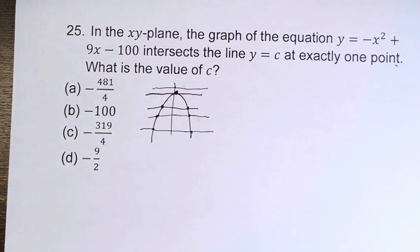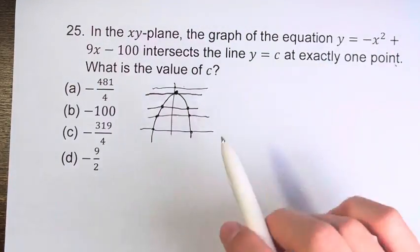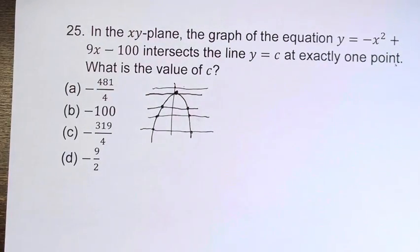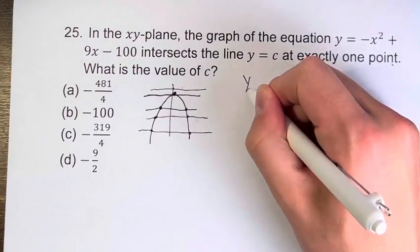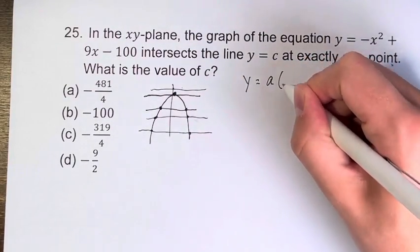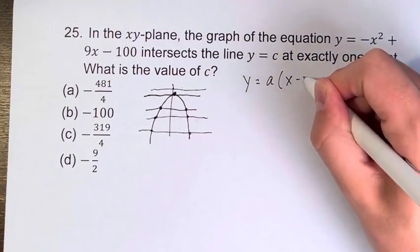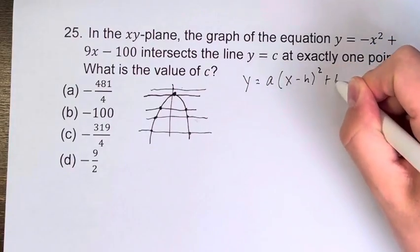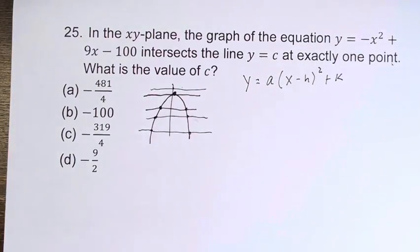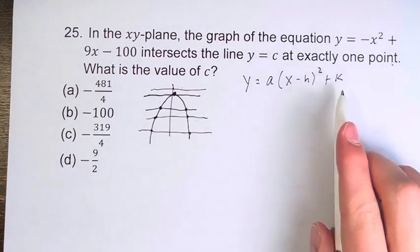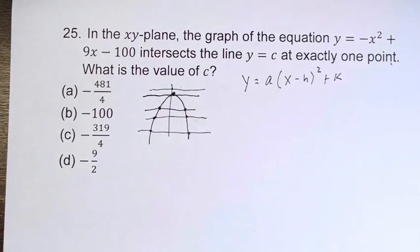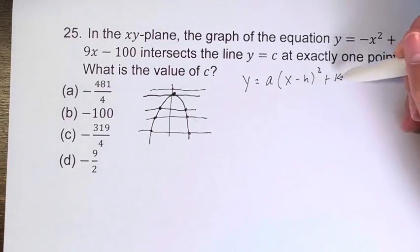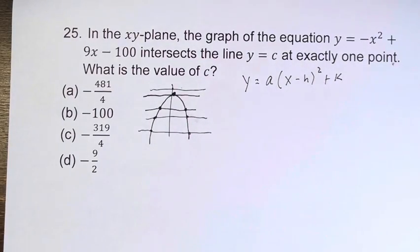What we have to do is convert this quadratic into its vertex form, which looks like y equals a times (x minus h) squared plus k. We want to get it into this form, where (h, k) is the vertex. The value of k is what we need for the value of c.